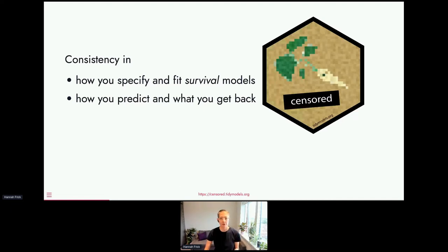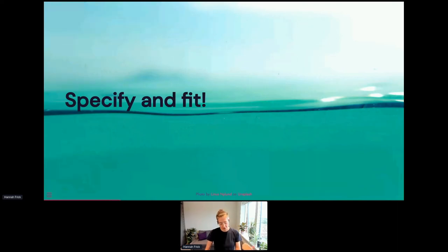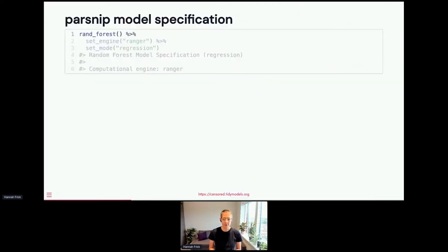So censored is a parsnip extension package specifically for survival models, and I'll be talking here about how these design principles are playing out for survival models. So the first part, specify and fit. Let's start out with a quick reminder of how you specify models in parsnip because you need three things. The model type. So in my example here, that's random forest. And then the second part you need is a computational engine. What do you use to fit that model? In our case here, it's the ranger package. It often is another R package, but it can also be a tool outside of R like TensorFlow and Keras or Stan for Bayesian models. And the third element in a parsnip model specification is the mode. So here it's set to regression, you could also use a random forest for a classification problem.